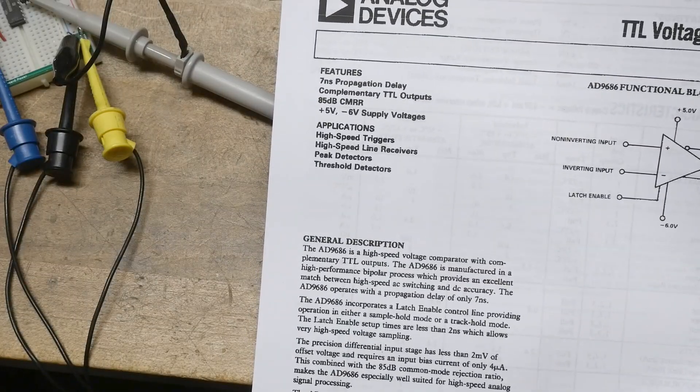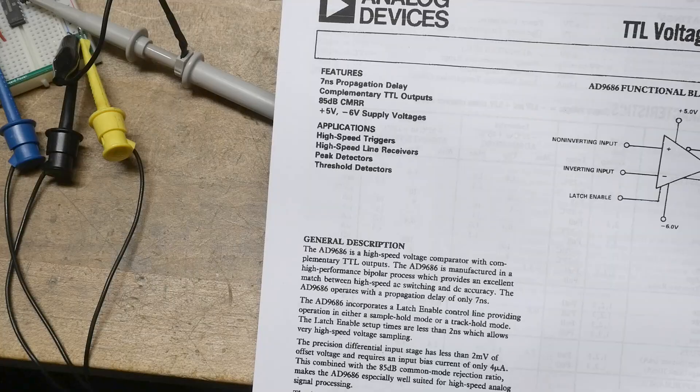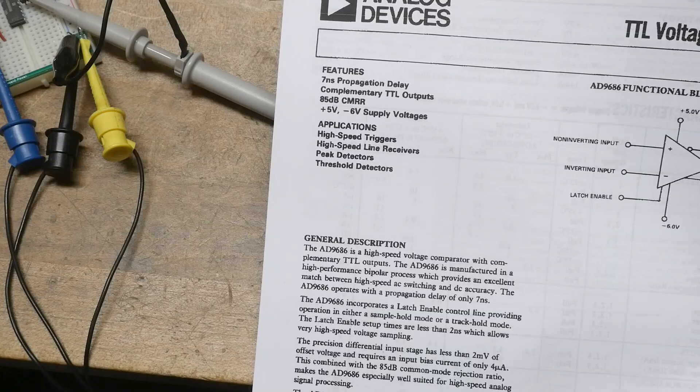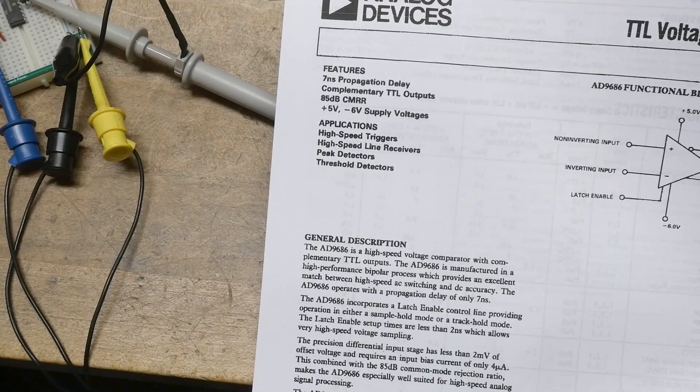7 nanoseconds TTL output. It's complementary. High-speed trigger, receivers, threshold detectors. Yep. Comparator type stuff.